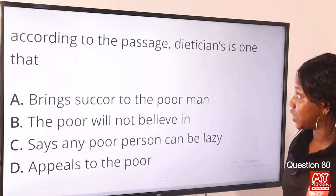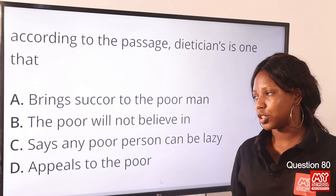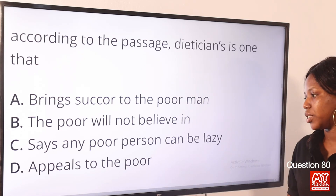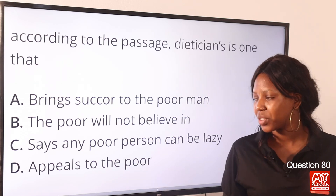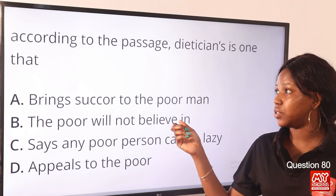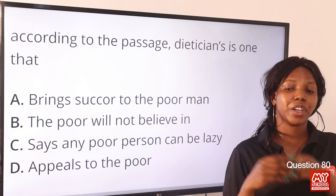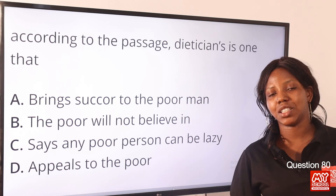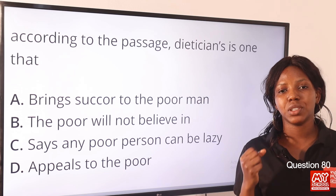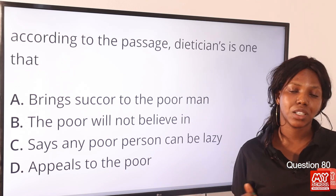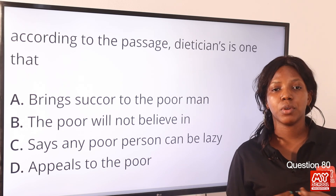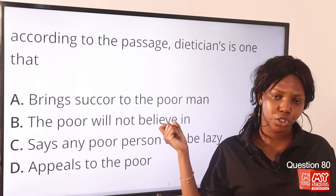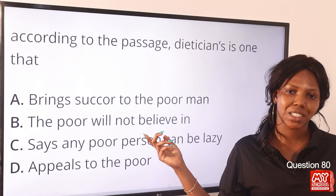Question 80. According to the passage, a dietician is one that — option B — the poor will not believe in. The dietician's recommendation is that everyone should have a balanced diet, but the poor believe this is a cock and bull story — meaning an unbelievable tale. So the poor will not believe in such a recommendation. Option B is the correct answer.